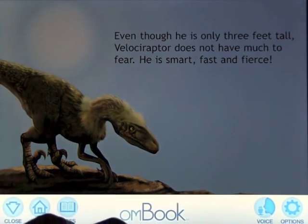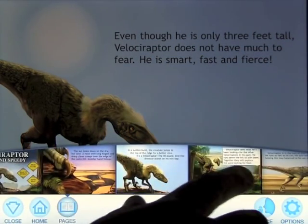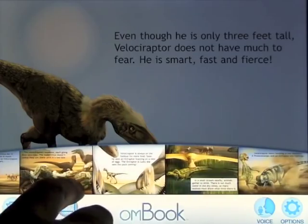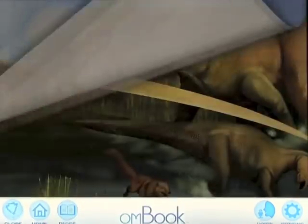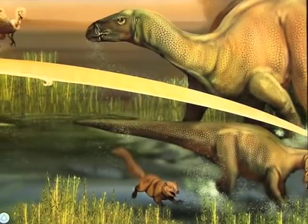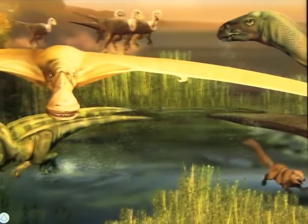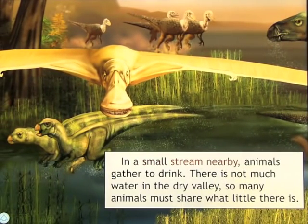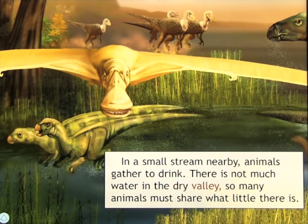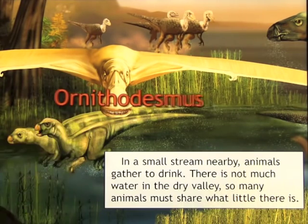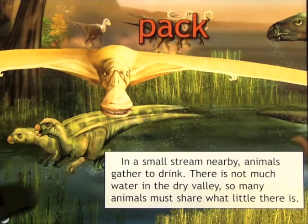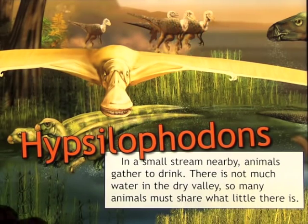If we pull the menu up again, we can look at the pages, and you can scroll to any page that you like within the book. So if we tap on one, it goes to that page, which reads: 'In a small stream nearby, animals gather to drink. There is not much water in the dry valley, so many animals must share what little there is.' And again, you can touch the words or the pictures — it's really nicely put together.